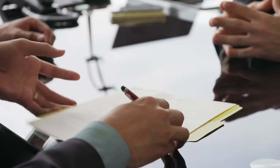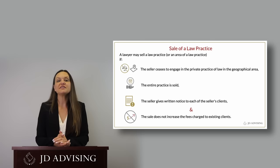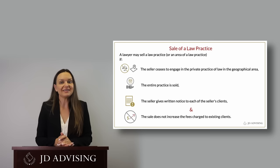Regarding restrictions, a lawyer shall not participate in offering or making any agreement that restricts the right of a lawyer to practice law after the termination of that relationship, except for agreements concerning benefits upon retirement. For example, if a law firm requires a lawyer to agree not to practice law in the jurisdiction if he quits or is fired, that violates the rules — for both the firm asking and the lawyer agreeing. Regarding the sale of a law practice, it may be sold if the entire practice or an area is sold, written notice is given to each client, fees do not increase, and the seller ceases to engage in private practice.